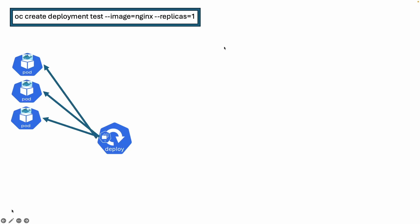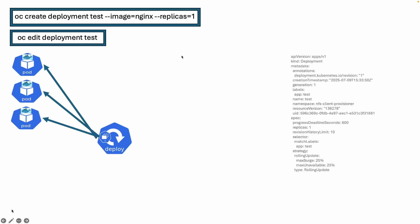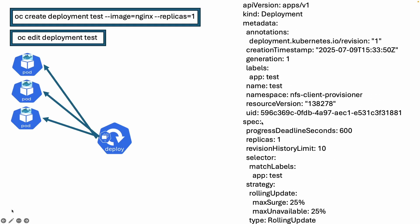Or once we have created the deployment, after that we realize we need to increase the pods. What we can do? We can execute the command `oc edit deployment` and then the deployment name. After that, a YAML file will open and you need to change the value — instead of one, you want three. Save the file and exit.